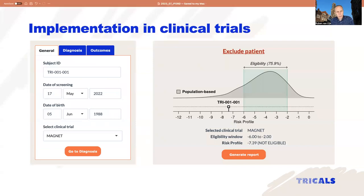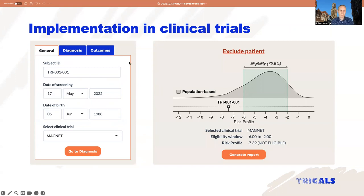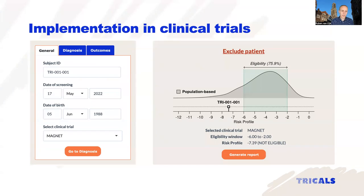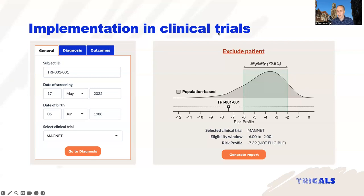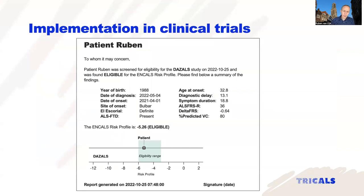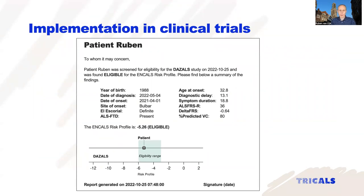We are now using the model in actual clinical trials. Because the prediction is quite complicated, we have developed a software tool for use in the clinic. At the moment we see a patient, we just enter the date of screening, date of birth, diagnostic information, and disease information. Based on those data, the tool gives the risk profile of the patient and shows the eligibility window where the patient should fall. In this example, the patient is not eligible because they fall outside this eligibility window. The tool creates an automatic report stating whether the patient is eligible or not, which can then be stored in the eCRF at the site.